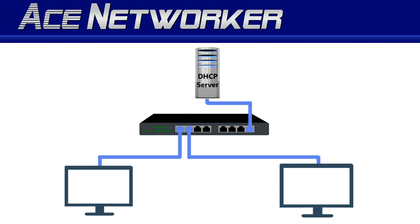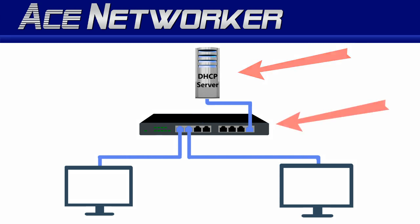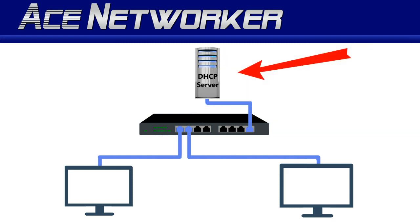The DHCP server will choose an IP address out of its allowed scope and respond to that host with the IP address, the subnet mask, the default gateway, and the DNS information. You can run a DHCP server on a server, or oftentimes on a router or a Layer 3 switch with the capability. On your home system, you'll likely find it on your home router. On an enterprise-level network, however, it's more than likely running on a server.